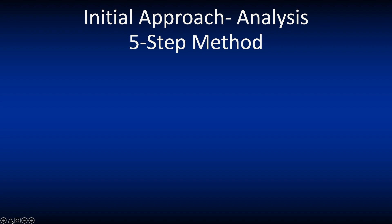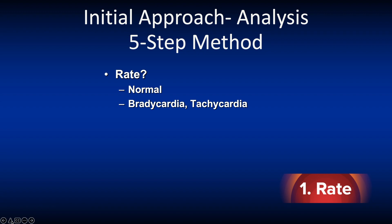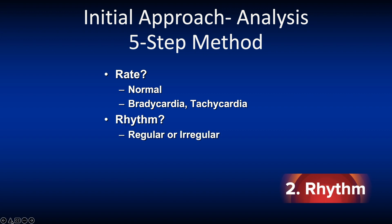Using a standard, consistent, and routine approach to rhythm analysis is the key to success, as is anything in resuscitation. The method we use during this basic ECG program is the five-step method. The five basic questions lead to correct analysis and diagnosis of the majority of rhythm abnormalities. One: is the rate within the normal range — 60 to 100 beats per minute — or is it fast above 100 or slow below 60? Two: is the rhythm regular or irregular? Measure the distance between the R waves; if they remain the same, the rhythm is regular; if they're consistently changing, it's irregular.